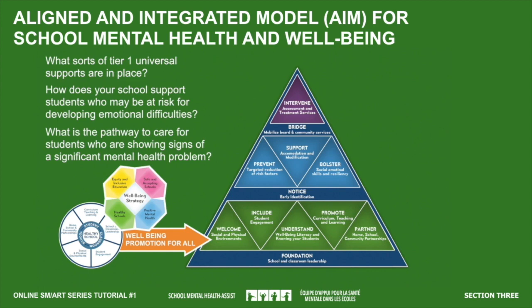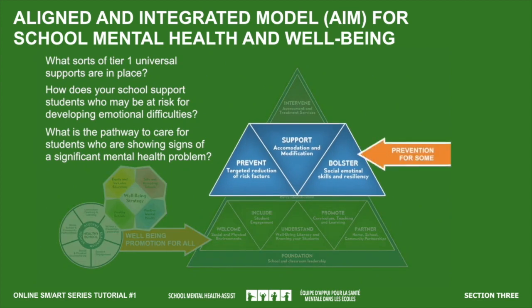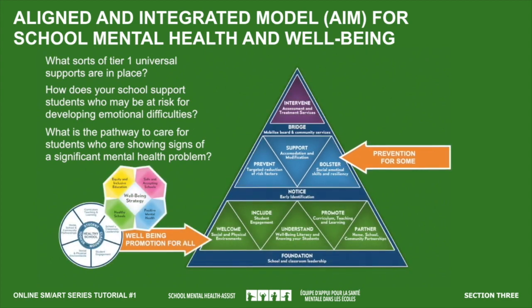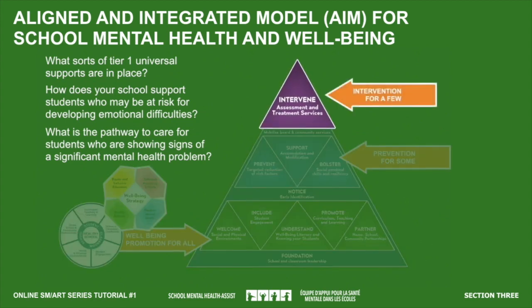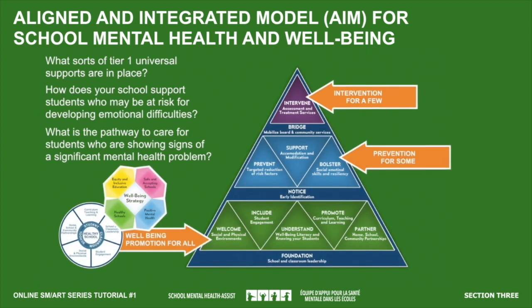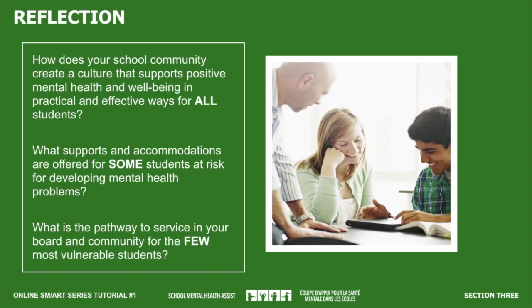Students who may be at risk for mental health problems certainly benefit from universal strategies but require a bigger dose of skill building and support. AIM suggests that Tier 2 strategies focus on strengthening protective factors, reducing risk factors, and providing support and accommodation. When we offer proactive skill development, caring foundations, and identify and prevent problems early, fewer students will require intensive mental health interventions. Trained mental health professionals within school boards or in the community provide strong evidence-based interventions for students who do struggle with a mental health problem.